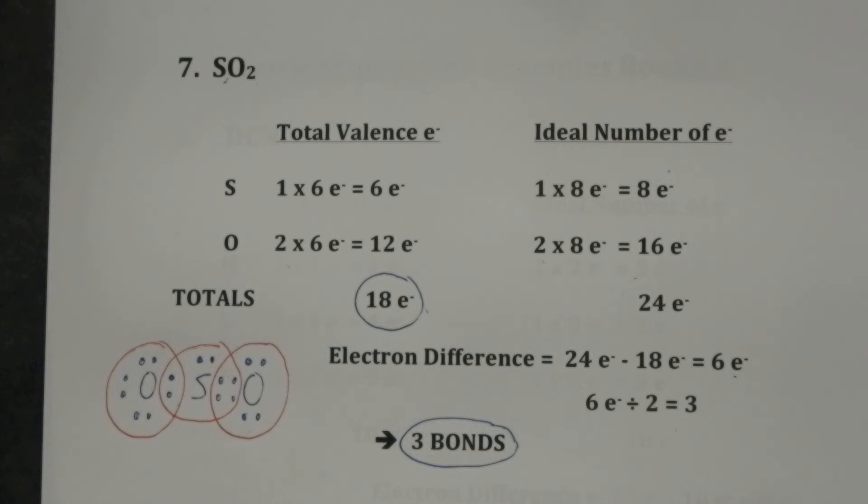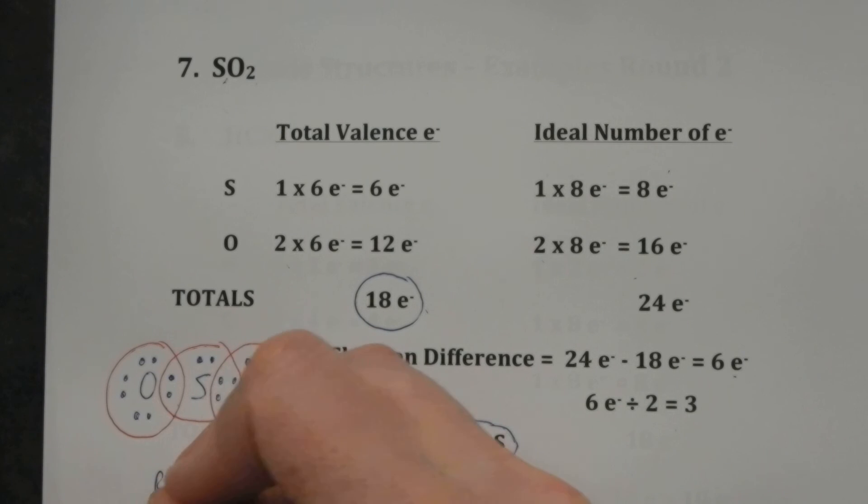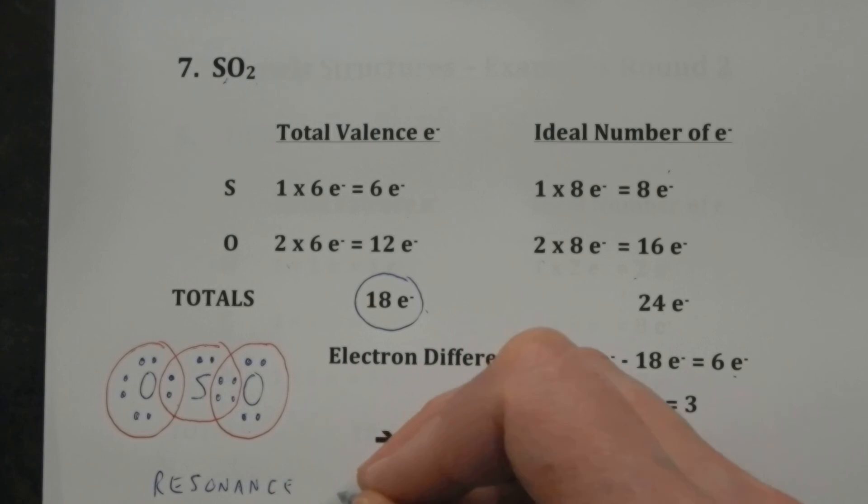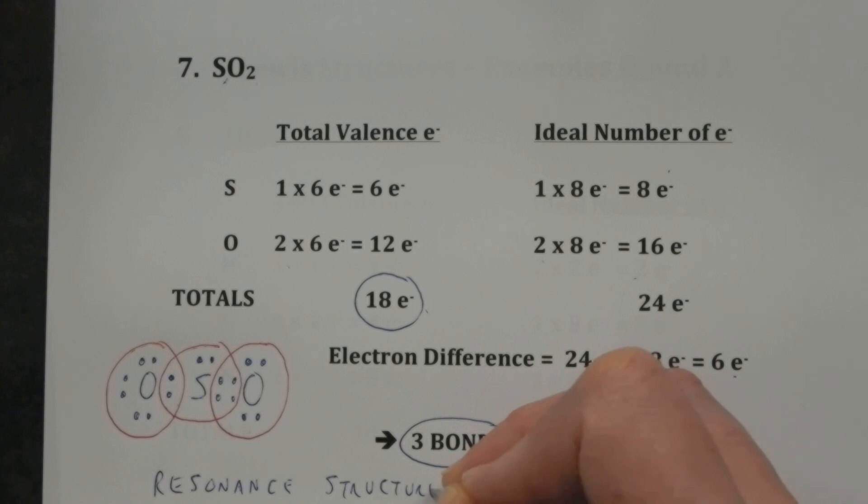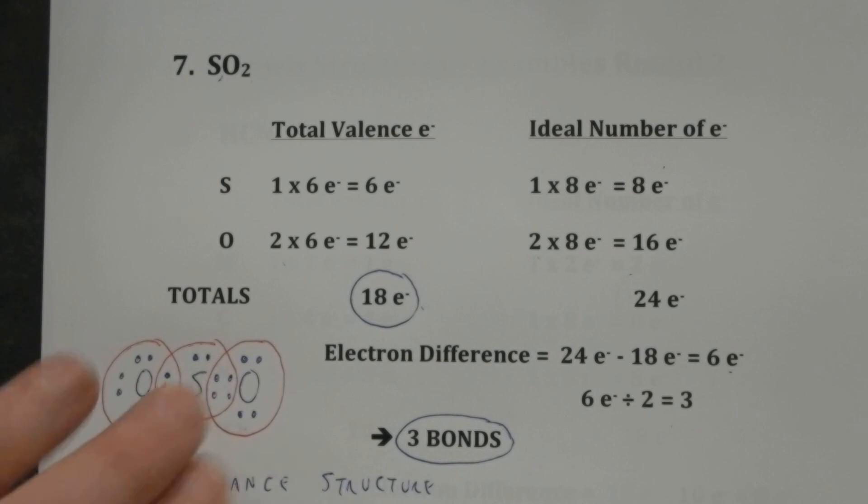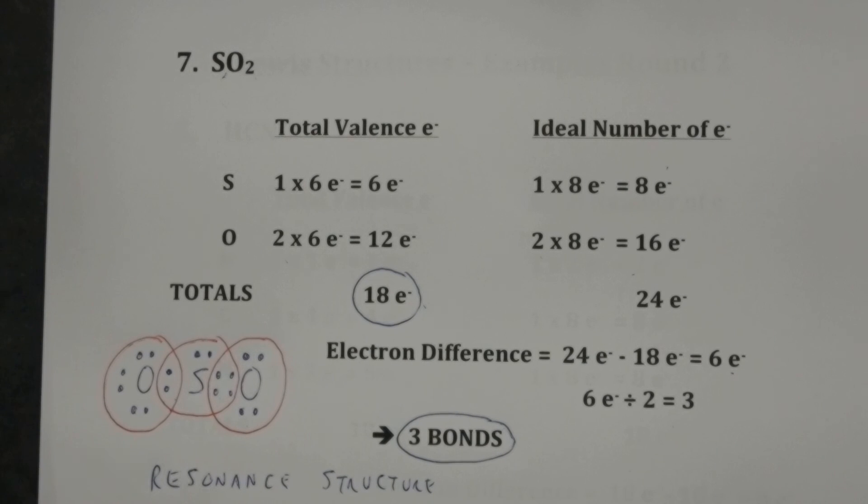It turns out that this is what we call a resonant structure. It's not perfectly accurate. In fact, we wouldn't actually get a single and double bond to be some sort of blend of them. But for Lewis structure, that is perfect.